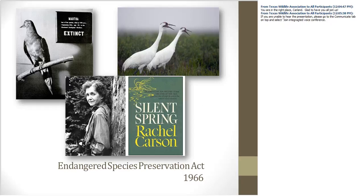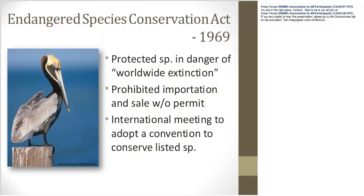Under that act, the Departments of the Interior, Agriculture, and Defense were to seek to protect listed species and preserve their habitat, and it authorized U.S. Fish and Wildlife to acquire land as habitat for endangered species. Congress then amended the 1966 act to create the Endangered Species Conservation Act of 1969, which prohibited the importation and sale of protected species without a permit and called for an international meeting to adopt a convention to conserve listed endangered species.